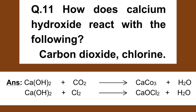Number 11. How does calcium hydroxide react with: A) carbon dioxide, B) chlorine? Ca(OH)2 plus CO2 gives CaCO3 plus H2O. Ca(OH)2 plus Cl2 gives CaOCl2 (bleaching powder) plus H2O.